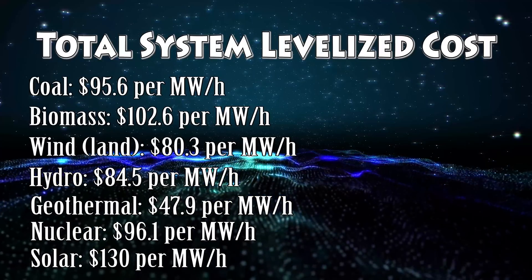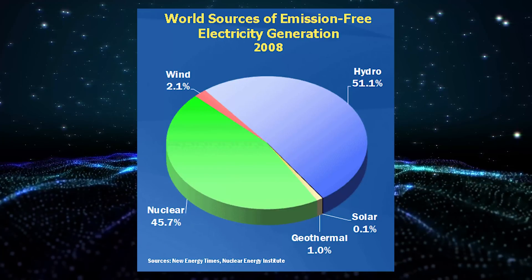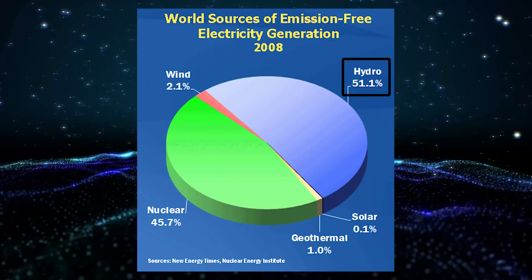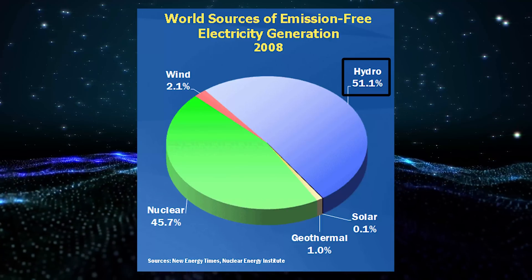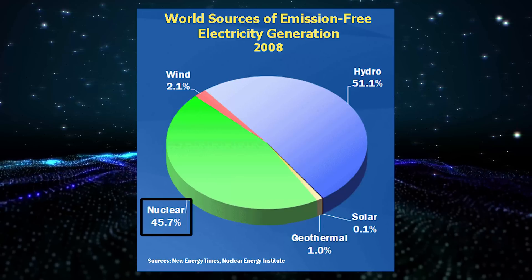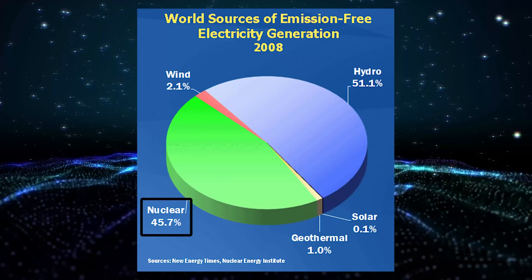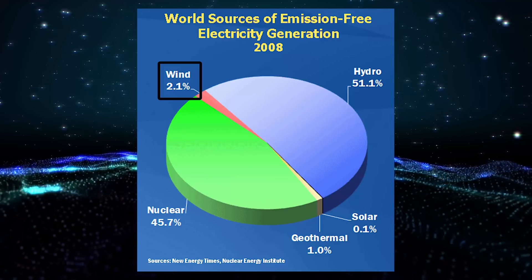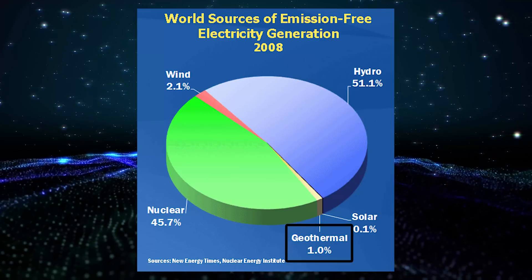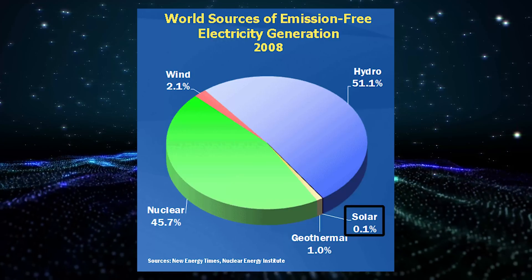Now that I've given you an introduction to the different renewable sources of energy, let's see a breakdown of the total electricity generation of each renewable power source. Hydroelectricity comprises more than half of emission-free electricity generation. Nuclear comprises slightly less of the pie chart than hydroelectricity. What is surprising is that wind makes up only 2.1% of the pie chart, geothermal only 1%, and solar energy a mere 0.1%.